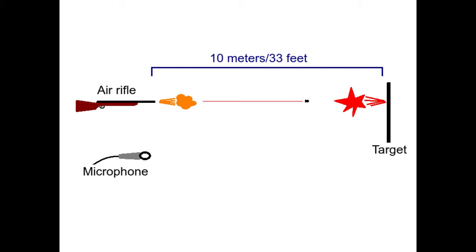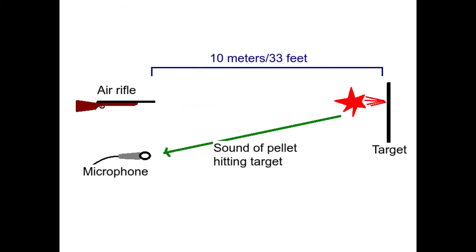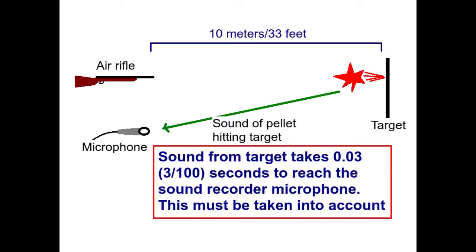When you fire a shot from your air rifle it makes a sound. That sound first reaches the microphone and gets recorded. A short while later the pellet goes and hits the target, making another sound, and then that sound travels back towards the microphone and gets recorded. Sound takes a short while to travel from the target to the microphone — for 10 meters, sound takes 0.03 seconds, or three hundredths of a second. You need to take this into account in the final calculation, but I'll come to that later.